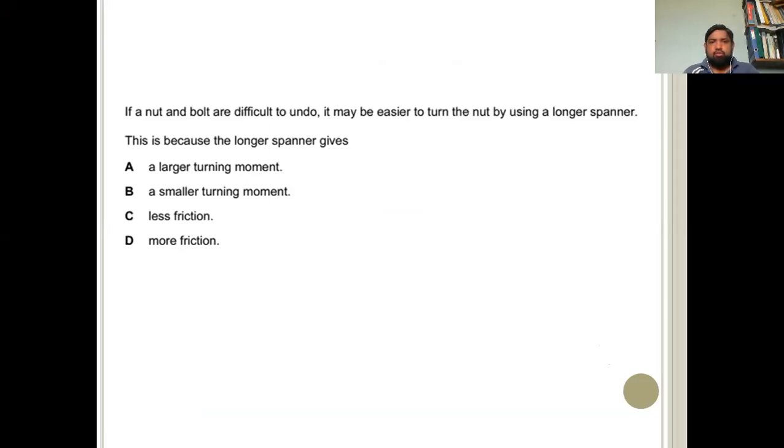So if a nut and a bolt are difficult to undo, it may be easier to turn the nut by using a longer spanner. This is because the longer spanner gives a larger turning moment. So what is the formula for turning effect of force? That is force into perpendicular distance between line of action of force and pivot. So if we have for example, this is the pivot and we have the spanner, we are applying the force like that. So the longer this distance, the larger the turning effect will be because turning effect of force is product of force and perpendicular distance. So larger the force or larger the perpendicular distance will end up having larger turning effect of force.